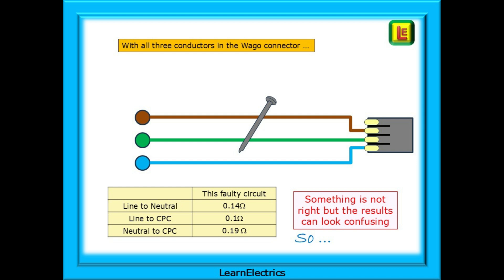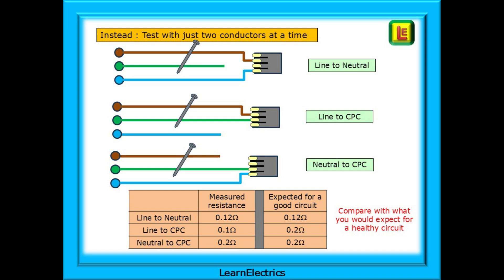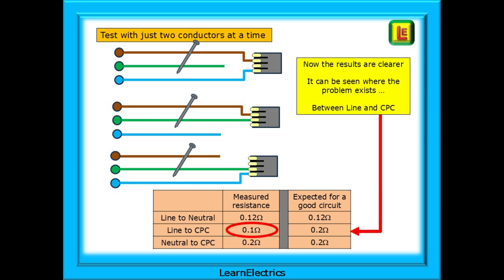Instead, test with just two conductors at a time. Just remove one conductor at a time from the Wago and retest on low ohms. Record your results and compare them to what a good fault-free circuit should measure. Now the results are clearer and it can be seen where the problem exists. With only two conductors connected together at any one time we find that the line to neutral and neutral to CPC show the same results as a healthy circuit, but line to CPC gives a completely different reading — and we can be fairly confident that the problem is between line and CPC. As the fault involves the earth or CPC, we call this an earth fault rather than a short circuit.